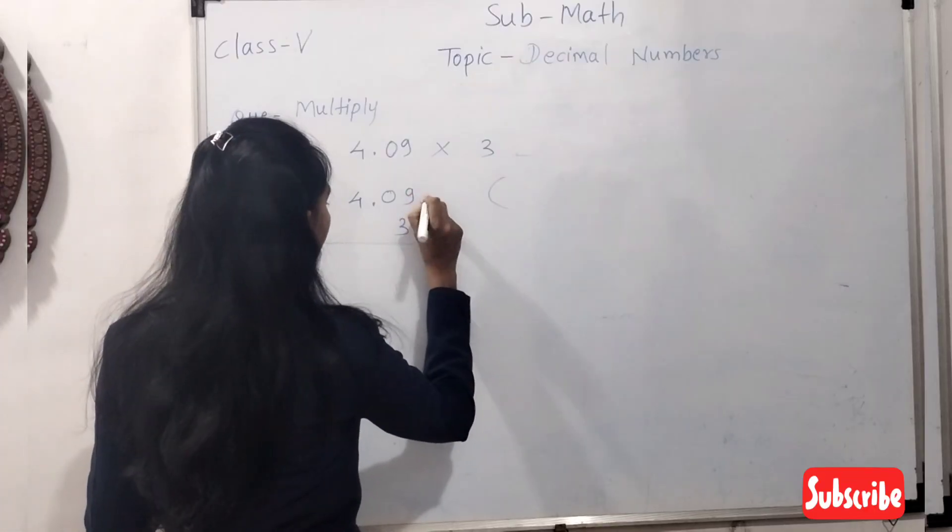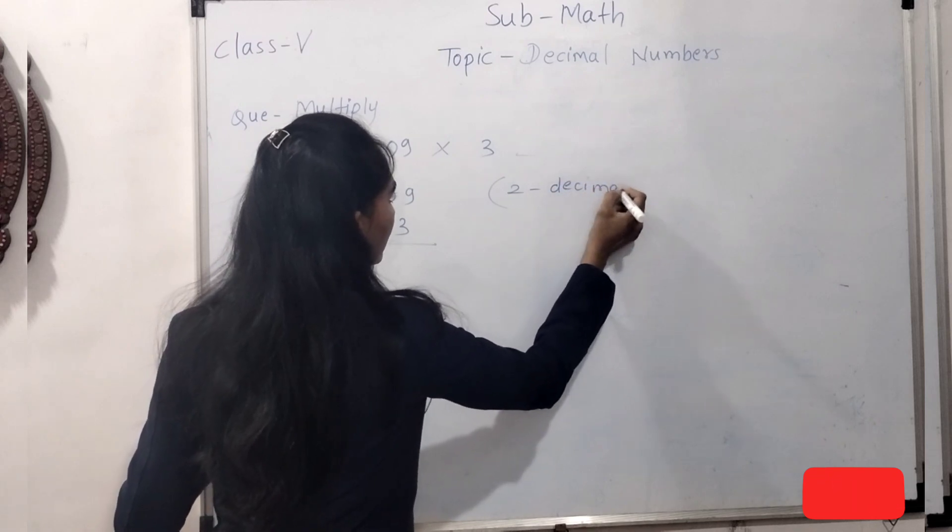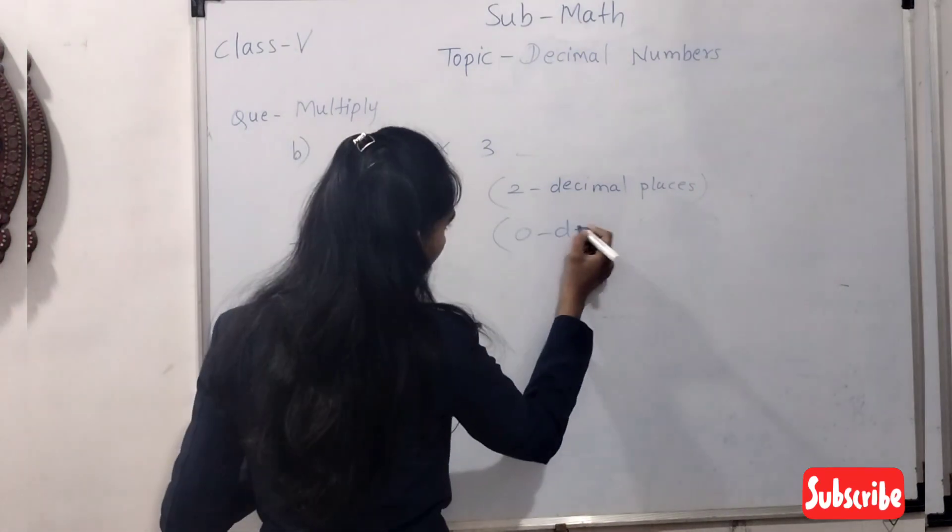This 4.09 has two decimal places. In this example, decimal point is not there, so it has zero decimal places.